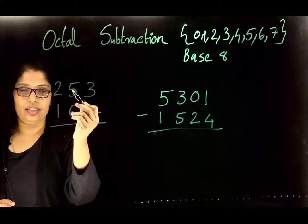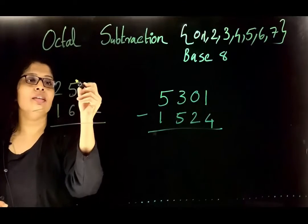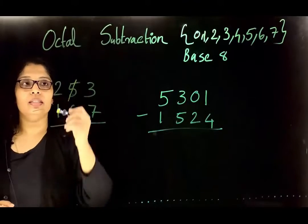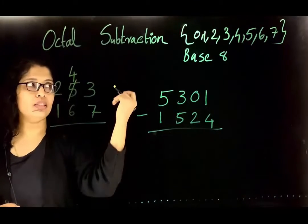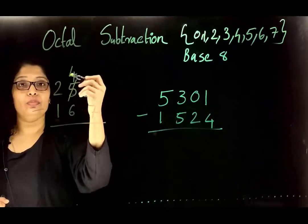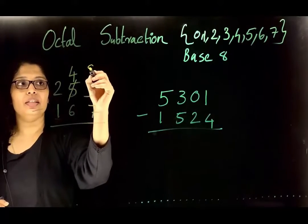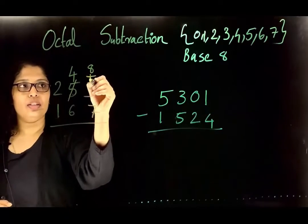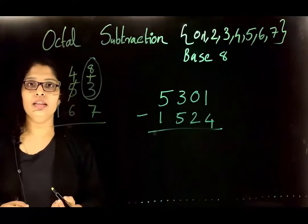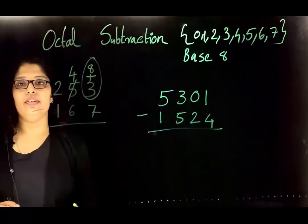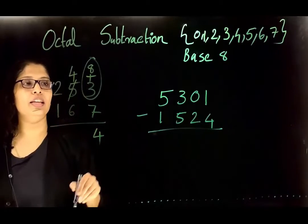By borrowing, the 5 is reduced by 1 and becomes 4. The borrowed value in this position becomes 8, because this is a base 8 system. As a total here we have 8 plus 3, which is 11. From that value we subtract 7: 11 minus 7 is 4. For the value 4 we have the direct representation 4, so we write 4 here.